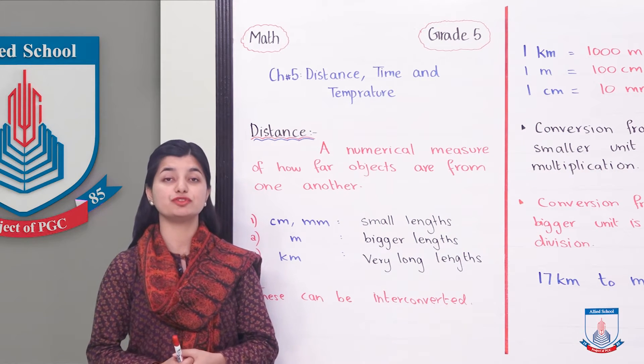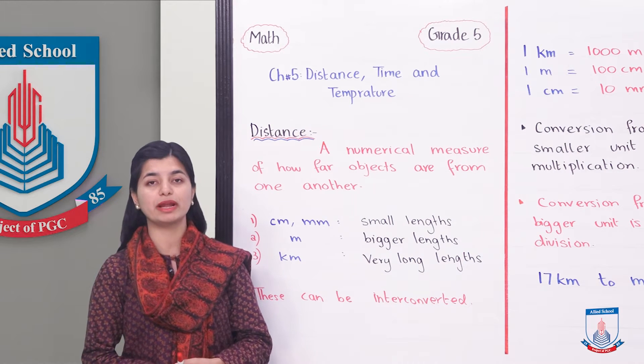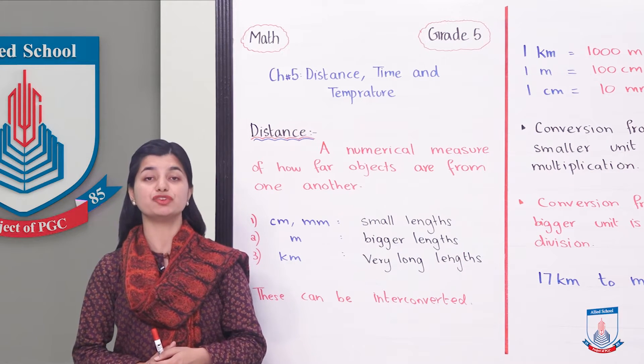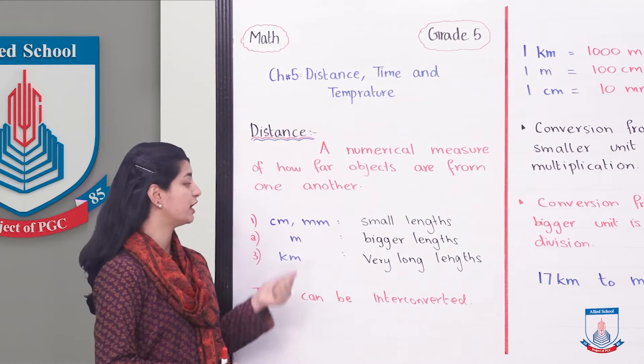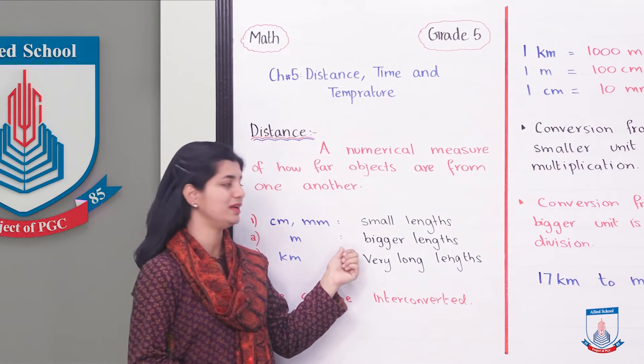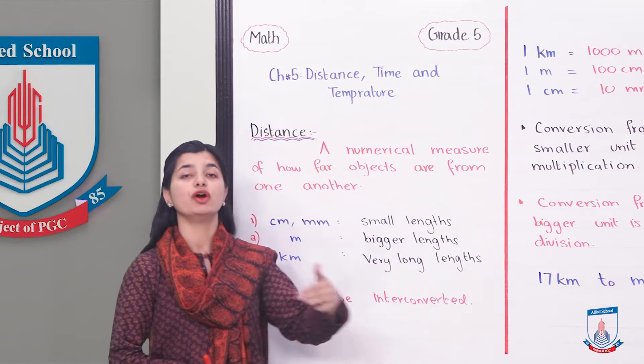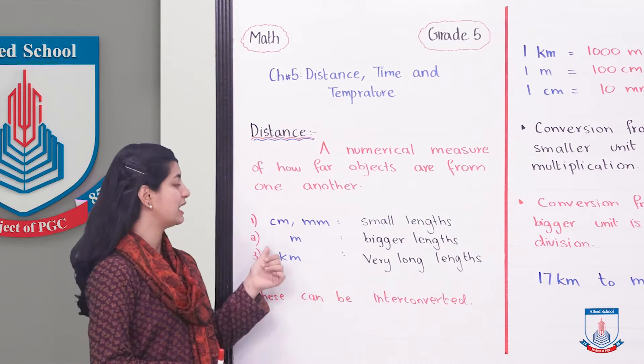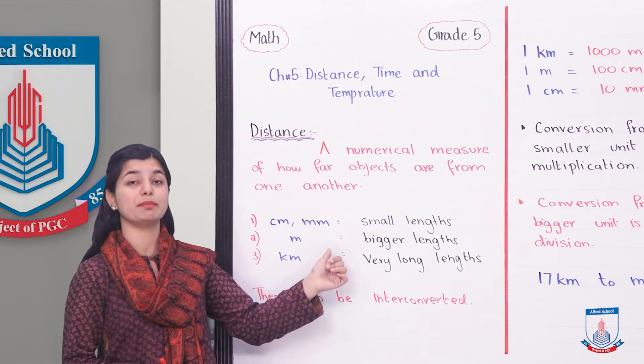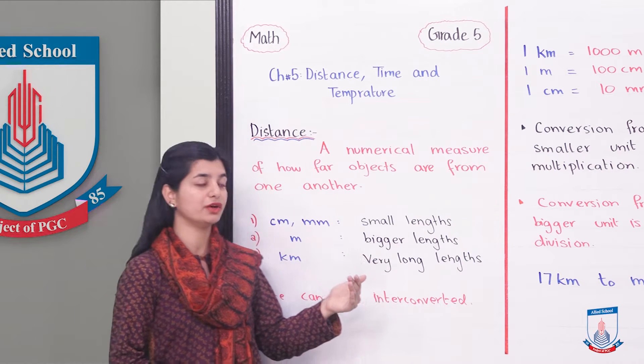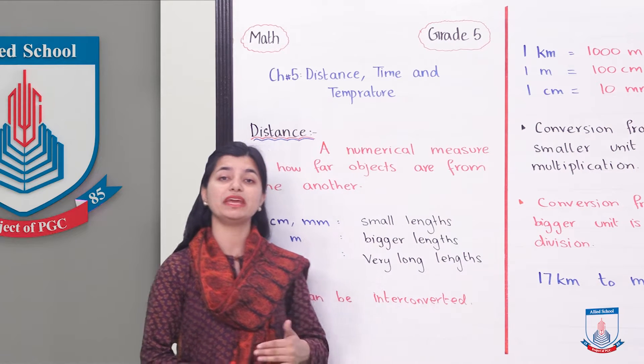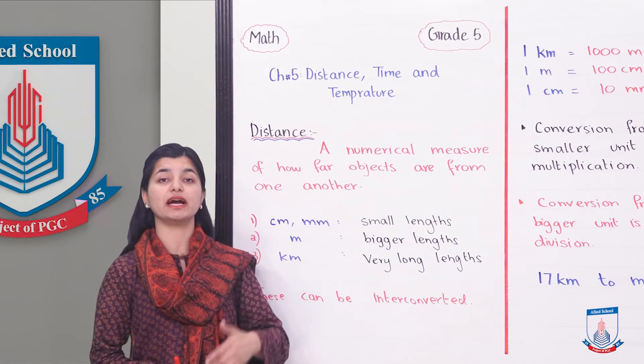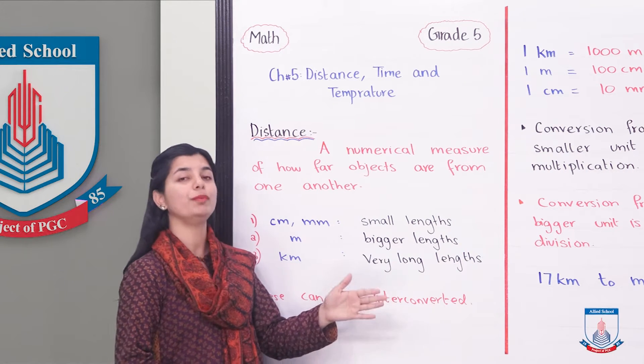Distance has different units which I hope you will already be familiar with. For very small distances, we use the units which we normally get on the scale - centimeters and millimeters for small lengths. There are some large lengths that we use meters for, like measuring tapes. And then kilometers for very long lengths. When you have to see a city from another city, you can measure it in kilometers.